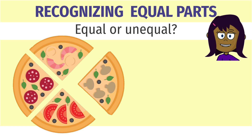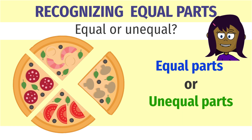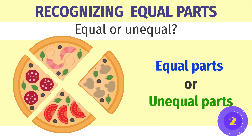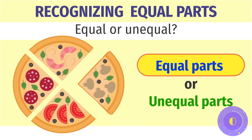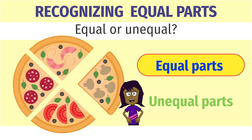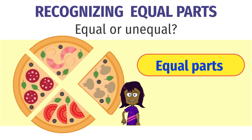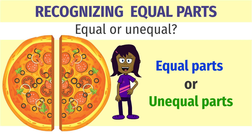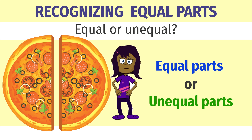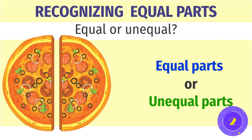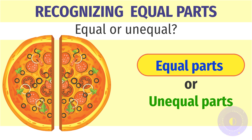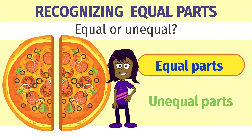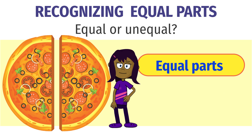Visually, can you say that the pizza has been divided into equal parts? The pizza has been divided into four equal parts. Visually, can you say that the pizza has been divided into equal parts? The pizza has been divided into two equal parts.